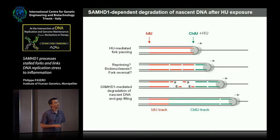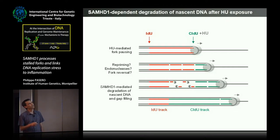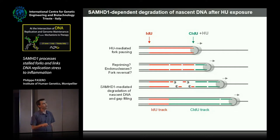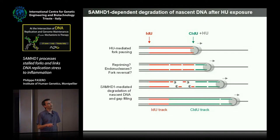We interpret these data as follows: we label ongoing replication, then add the drug. In the presence of hydroxyurea, there are nicks created on newly replicated DNA, probably due to MRE11 activity as proposed by Vincenzo Costanzo, and probably these nicks are enlarged by some nuclease activity involving SAMHD1 while the fork keeps moving. These red tracks are progressively replaced by green tracks as the fork moves.